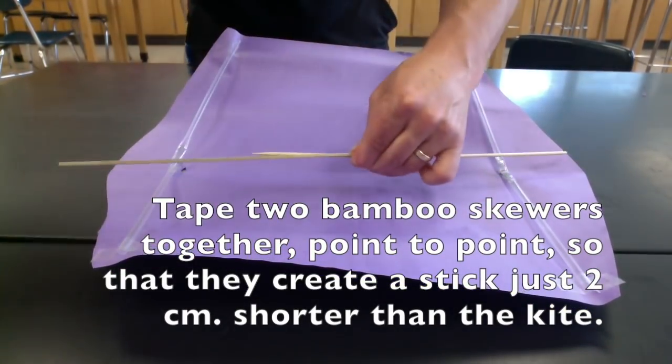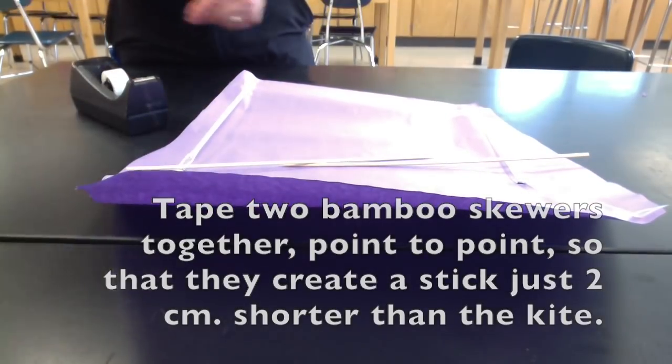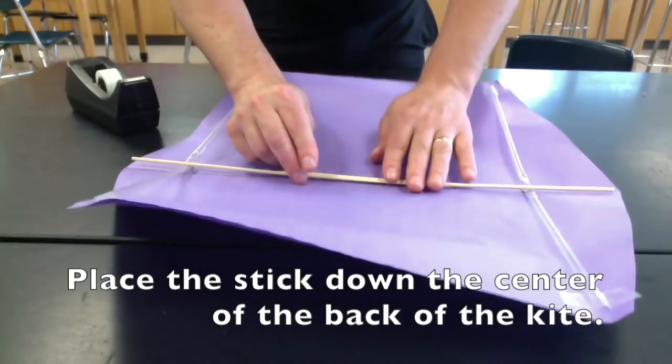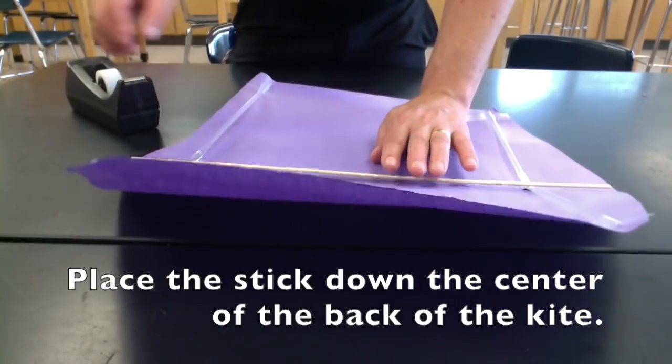Now, tape two bamboo skewers together point to point so they create one stick that is two centimeters shorter than the kite. Place the sticks down the center of the back of the kite.